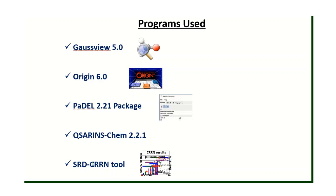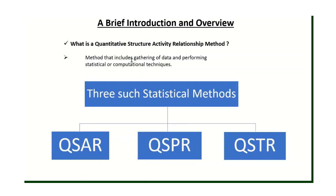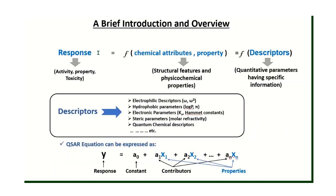My project work is completely based on the Quantitative Structure-Activity Relationship (QSAR) method — a method that gathers data and performs statistical and computational techniques on that data. Three such methods are: Quantitative Structure-Activity Relationship, Quantitative Structure-Property Relationship, and Quantitative Structure-Toxicity Relationship. The activity, property, and toxicity are called responses, and those responses depend upon chemical attributes like structural and physicochemical properties, called descriptors, each carrying specific information about the system.